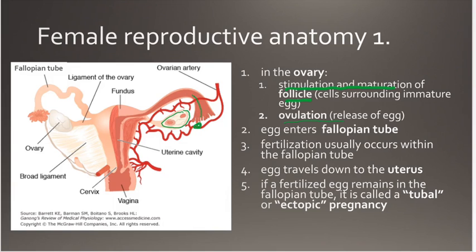The egg should enter the fallopian tube, and that is where fertilization should occur. If sperm come up and enter the uterus and swim up through the fallopian tube, they should meet the egg there, and a fertilized egg would then be produced, which would then move down and implant within the uterus itself.